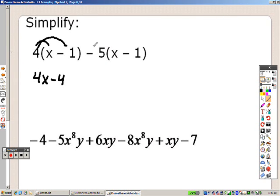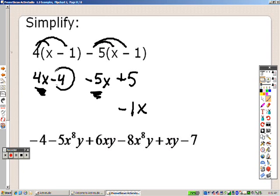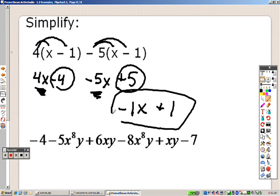Now you need to distribute this through using the distributive property. Negative 5 times x is negative 5x. Negative 5 times negative 1 is positive 5. So now you need to combine like terms. I have 4x's and negative 5x's which means I have negative 1x. I have negative 4 plus 5 which gives me positive 1. And there is everything combined together.